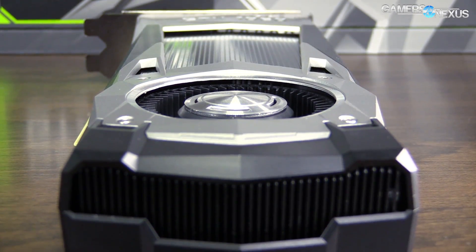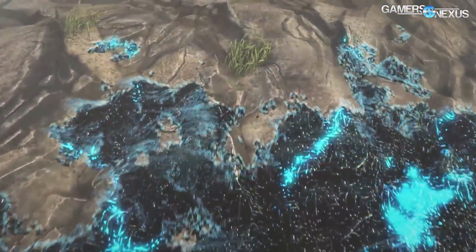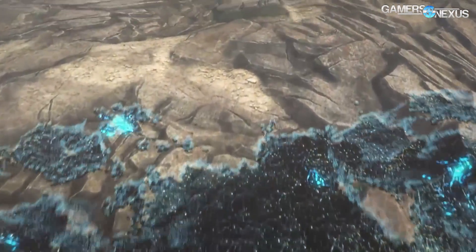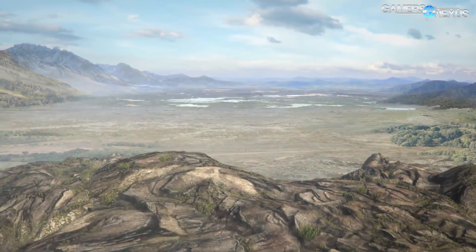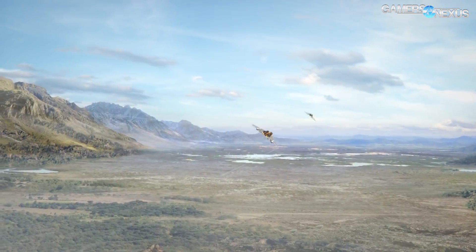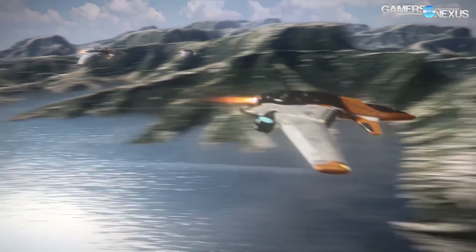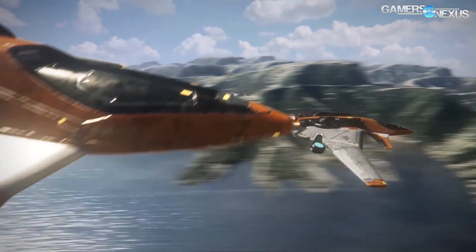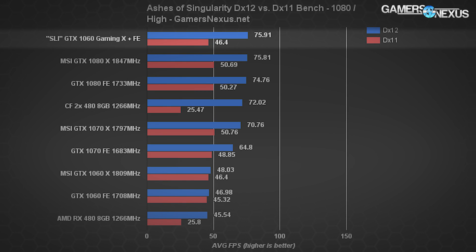Ashes supports explicit multi-GPU, which has been coded by the developers to take advantage of DirectX 12 functionality. This also allows cross-brand video cards to be paired, which we already did with the 970 and 390X. For this test we ran mostly at 1080p and 4K with high settings, though we've done some other tests as well.